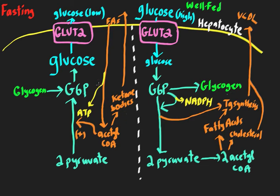During the fasting state, all these processes are turned on, and all the opposing reactions are turned off. In the well-fed state, glucose is entering the liver, we're making glycogen, glycolysis is occurring, we're making fatty acids, cholesterol, and triglycerides, and sending them out as VLDL. This really boils down to glucose going in and out of the liver cells as a major way to think about it.